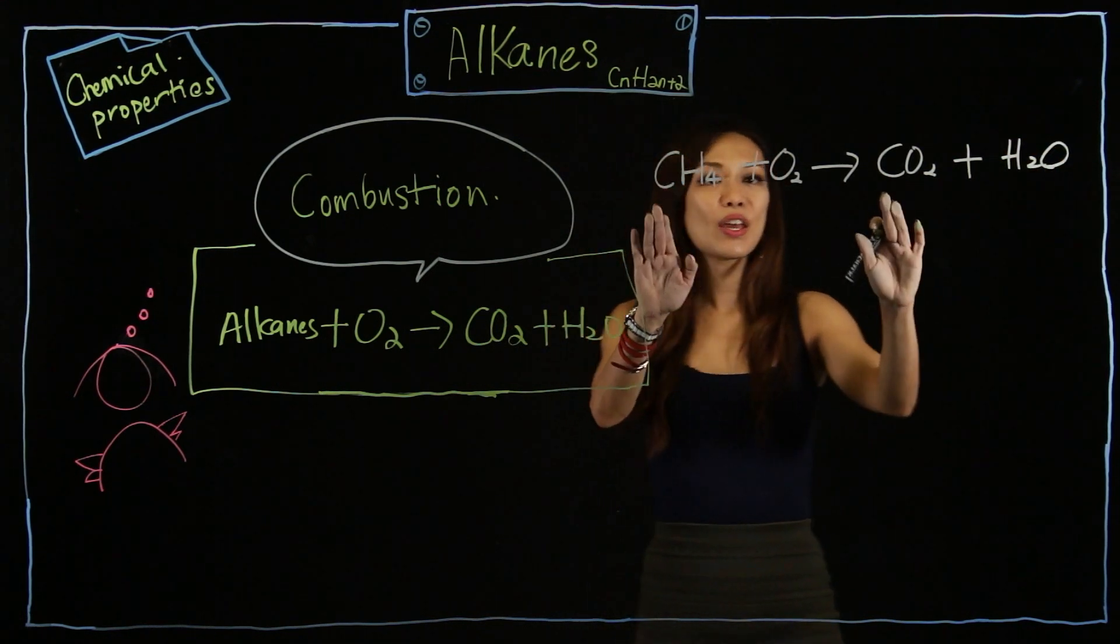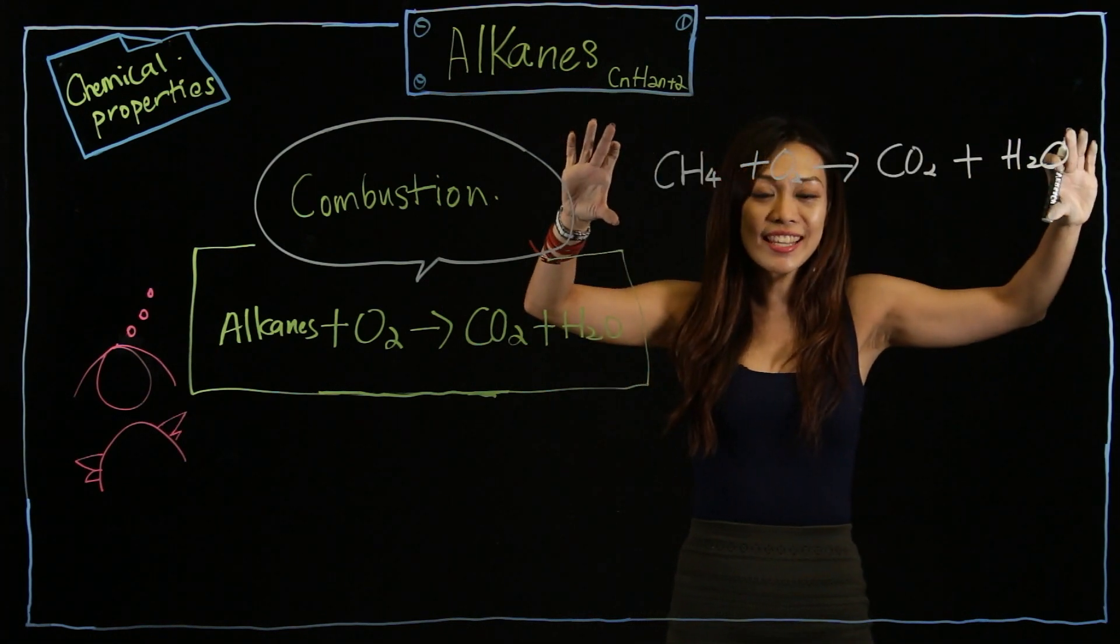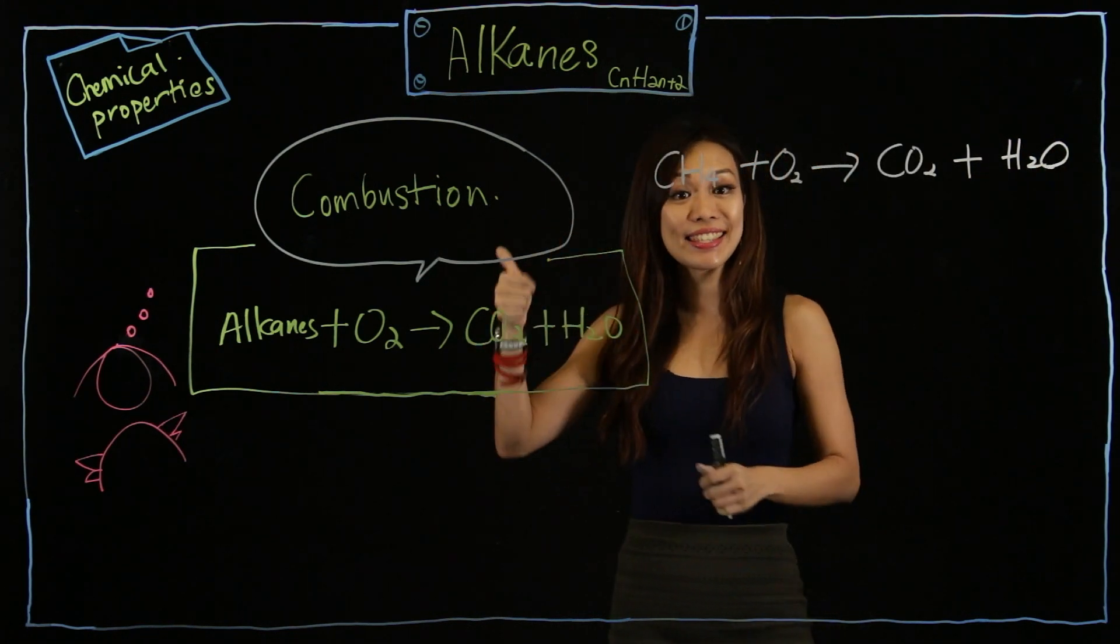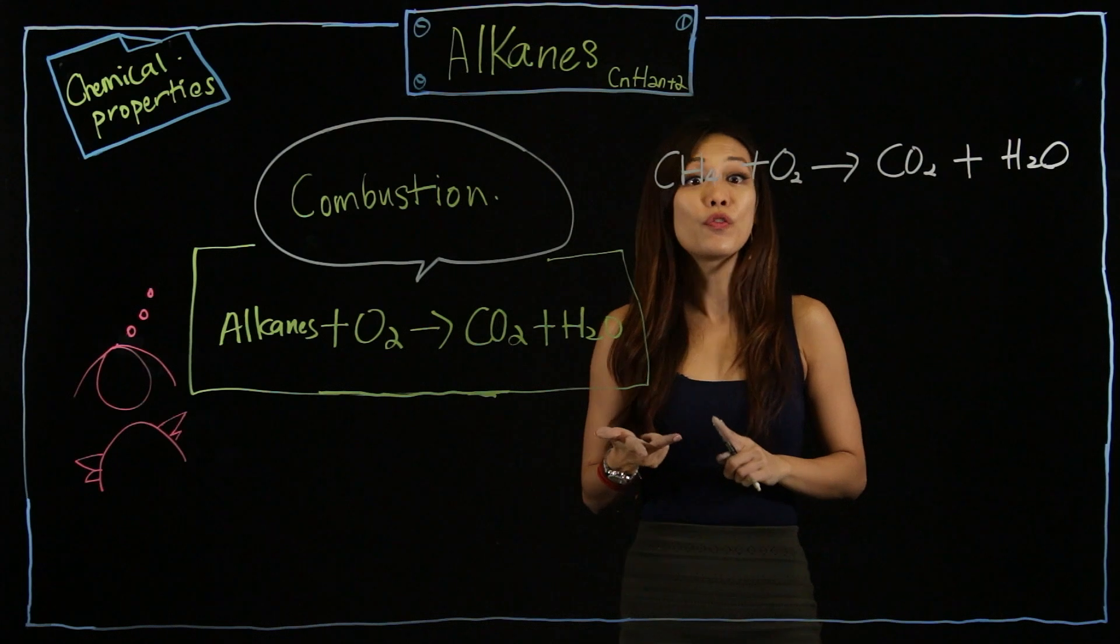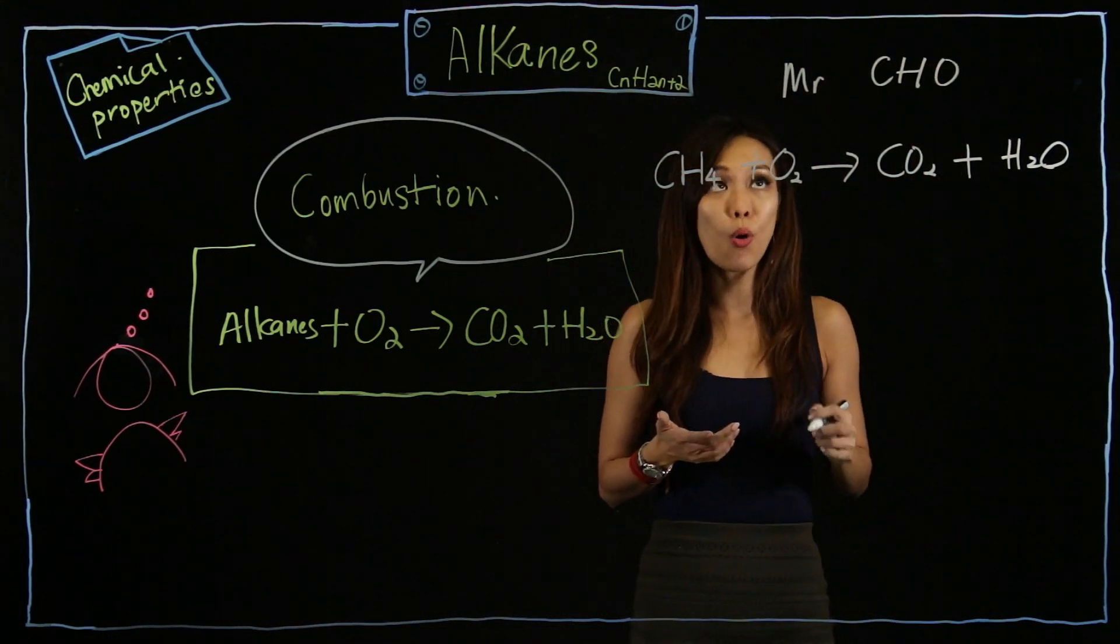Balance the C, followed by the H, followed by the O. In balancing, as I mentioned, balance the C, followed by the H, followed by the O. I call this the Mr. Chow method, CHO.